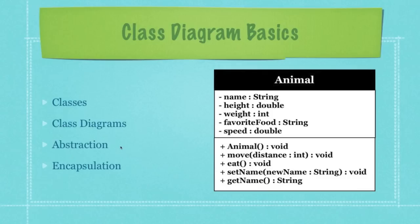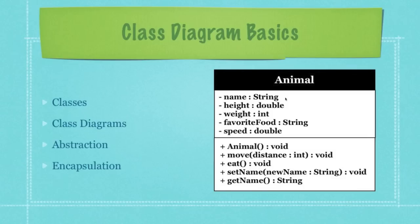Getting into abstraction — in the process of creating objects you want to eliminate as many details as possible until you have a blueprint that applies to all objects of a certain class. So if we're creating animals, we don't want to put information that only applies to very few objects — like an animal with a scratch on its one toe. However, every animal we define will likely have a name, height, weight, favorite food, speed, and should be able to eat and move, as diagrammed on screen.